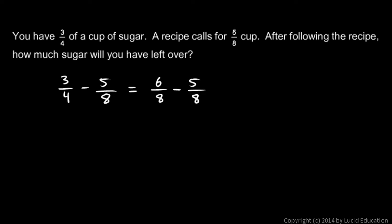So three-fourths minus five-eighths is the same thing as six-eighths minus five-eighths, and I can subtract those because they're like fractions, they're both eighths. Six-eighths minus five-eighths is one-eighth, and that's my answer: one-eighth of a cup left over.